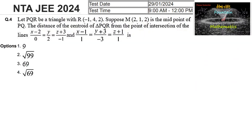Let PQR be a triangle where R is the vertex (-1, 4, 2) and M is the midpoint of line segment PQ. We consider M as the midpoint with coordinates (2, 1, 2), and we need to find the distance of the centroid of the triangle from the point of intersection of two lines.